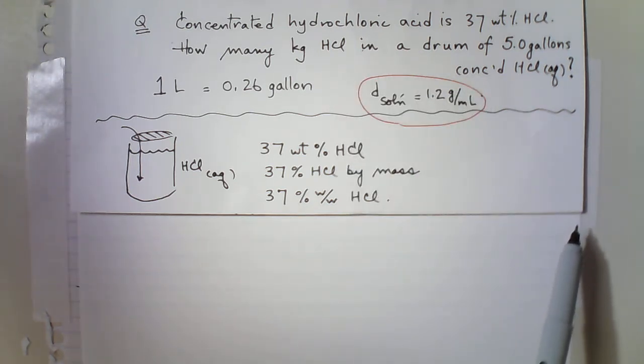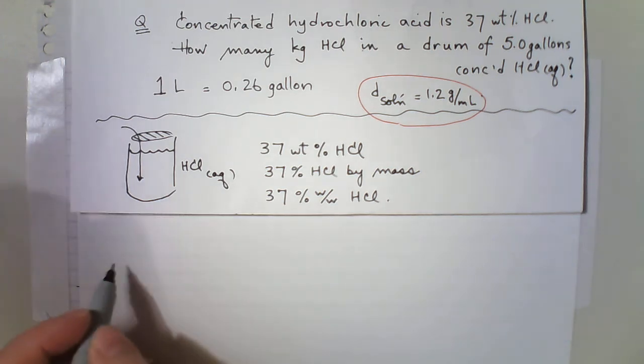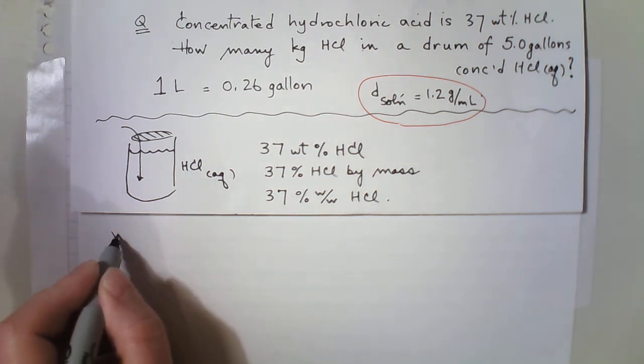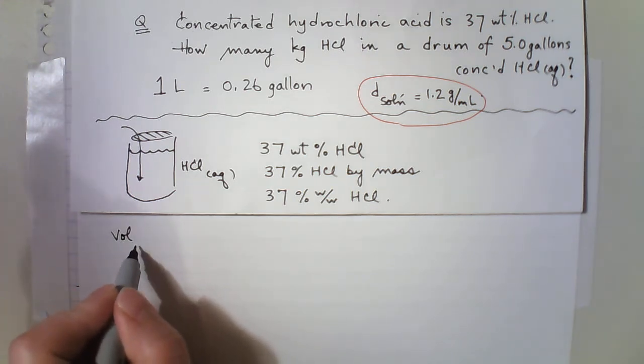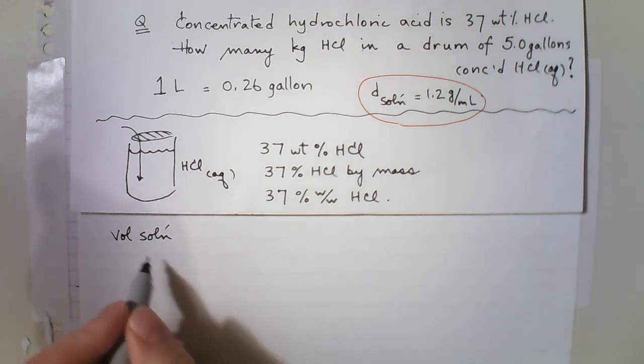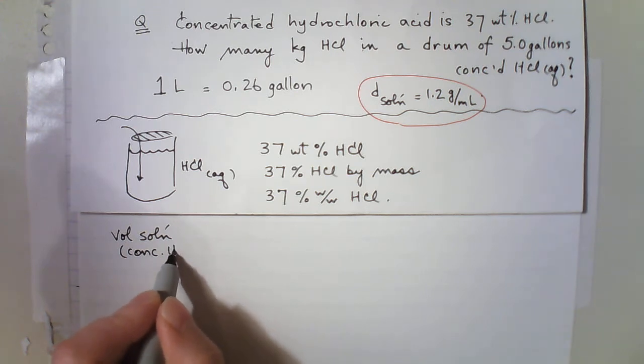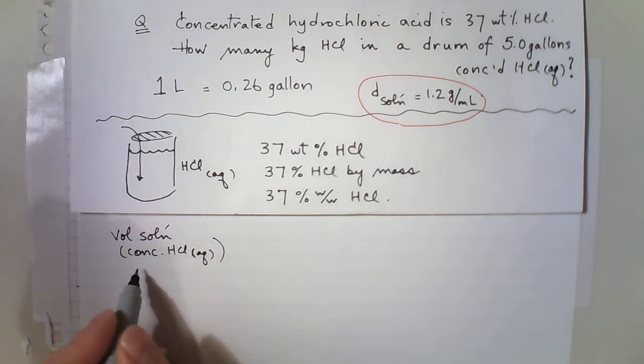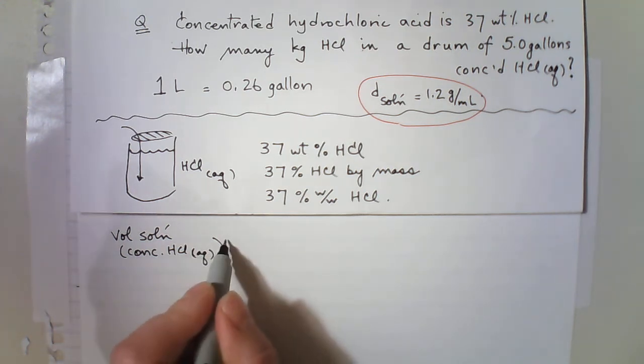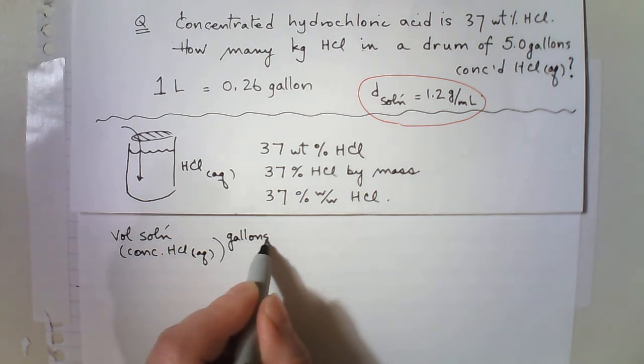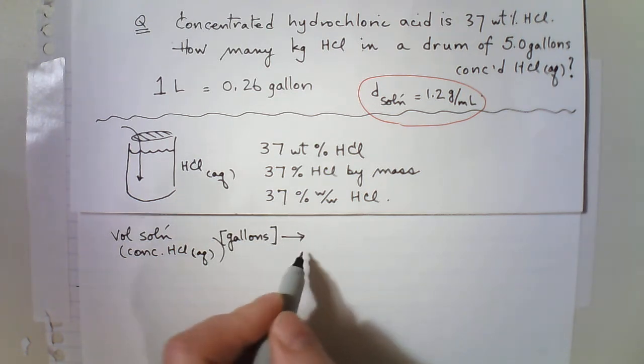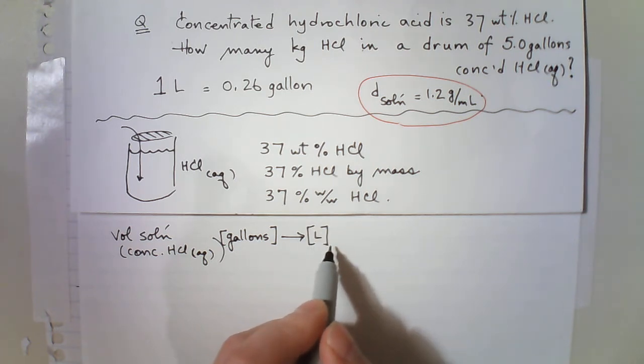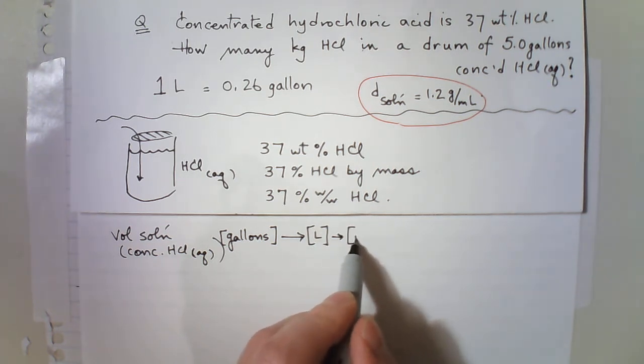But before I actually write out the number, let's talk about the calculation pathway and write that out. So we are given the volume of solution. What I'm calling the solution is the concentrated HCl aqueous. Okay, that's what I'm calling a solution. So I have a volume of solution, and it's going to be in gallons. And I want to change that to liters, and probably to mLs.